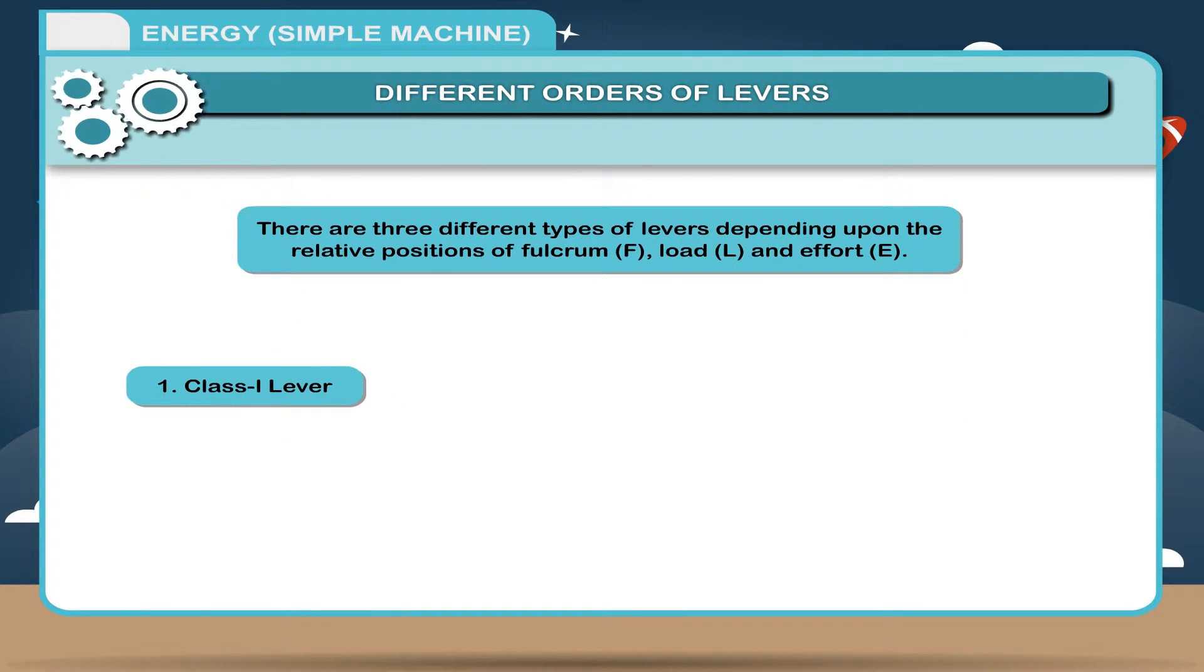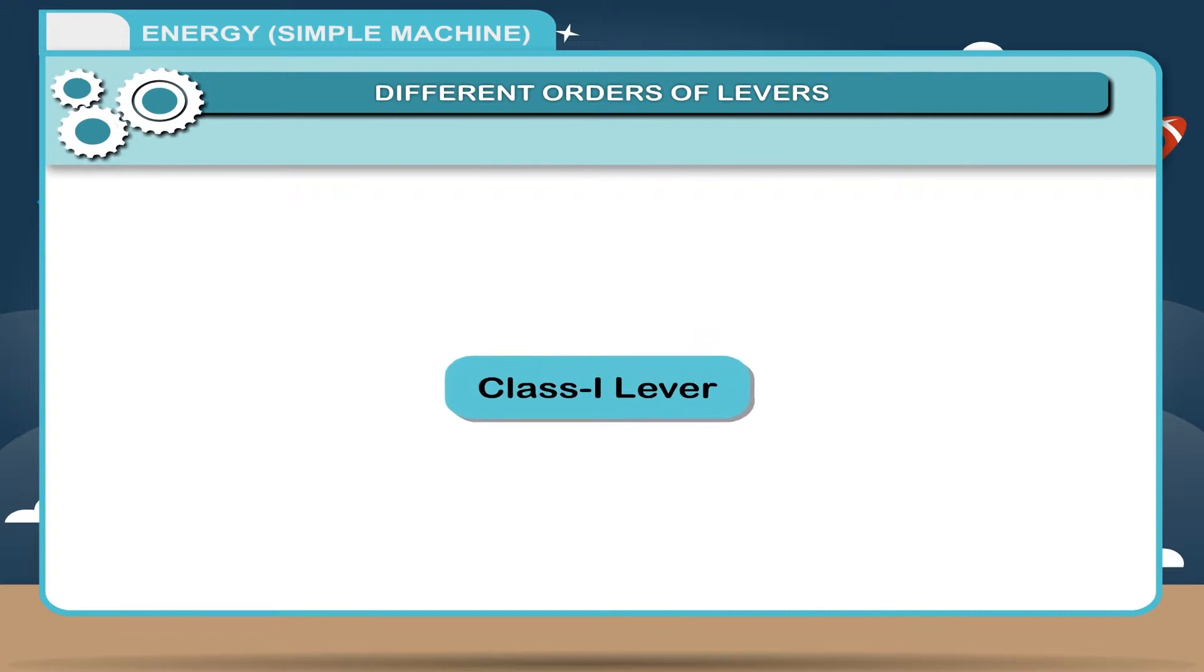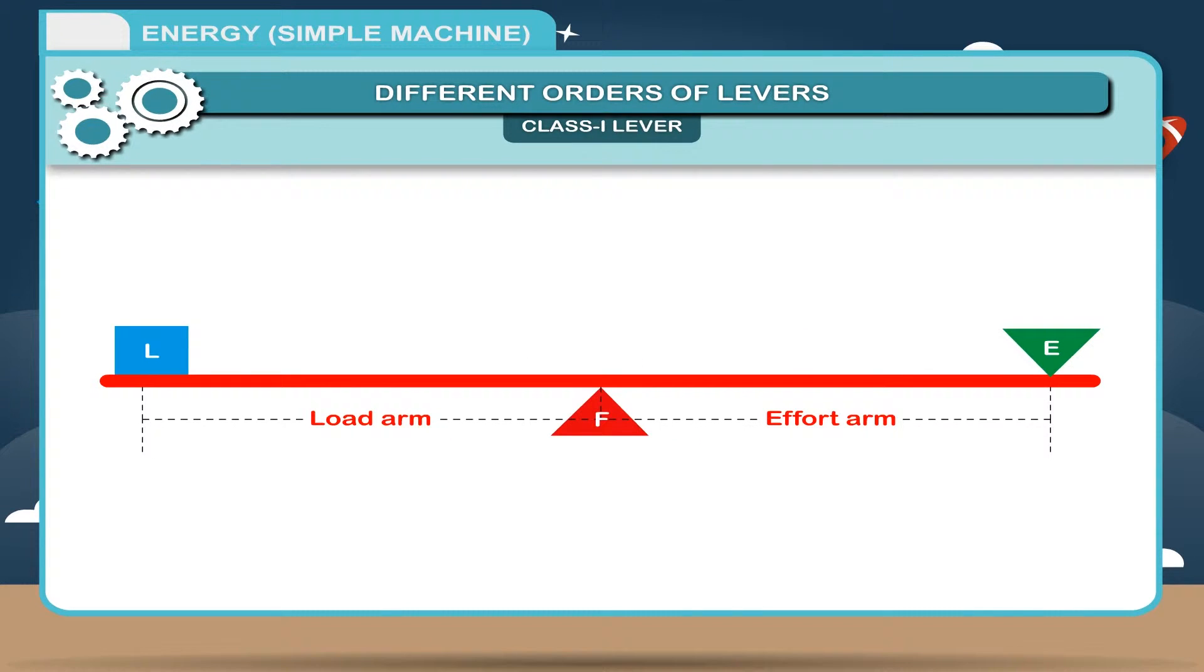Class 1 lever, Class 2 lever, Class 3 lever. Class 1 lever: In this class of lever, the fulcrum F lies between the load L and the effort E.